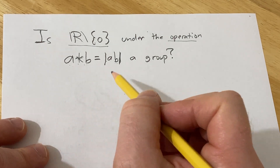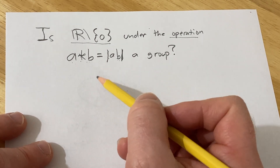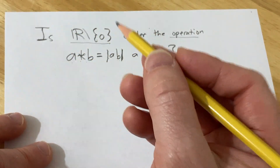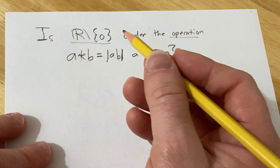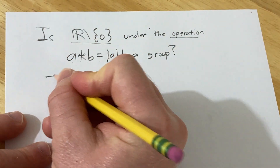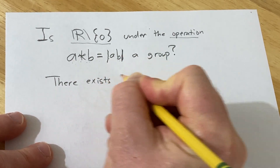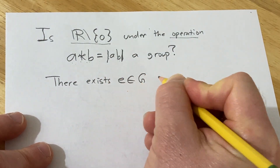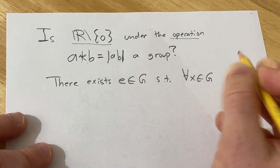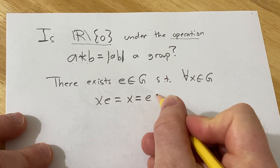We just have to determine if it's a group, and what sticks out to me is the identity element. One of the axioms of a group says: there exists e in G such that for all x in G, x star e equals x equals e star x.